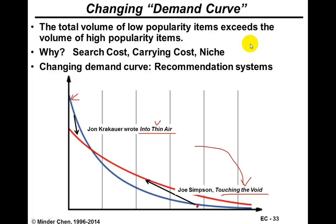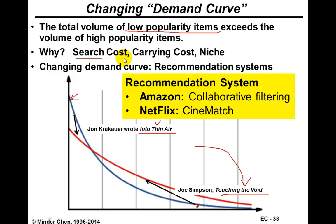For online retailers, sometimes the total volume of low-popularity items may exceed the volume of high-popularity items. Part of the reason is the recommendation system. It's also easier for people to search that massive amount of items. The carrying cost may be much lower because they don't need an expensive storefront — they need storage space, but the cost per unit is much cheaper. Netflix has something called Cinematch, another example of a recommendation system, and you see this type of system in many online retail stores.